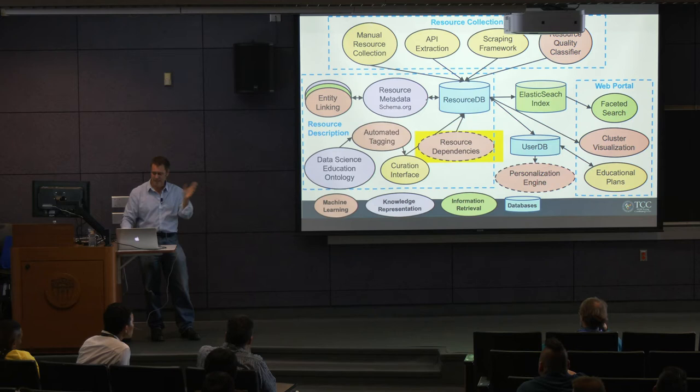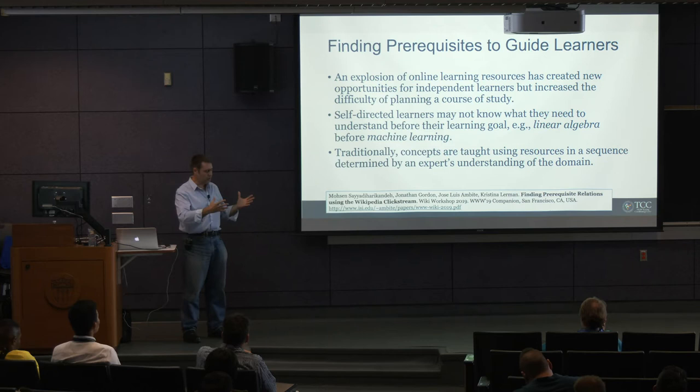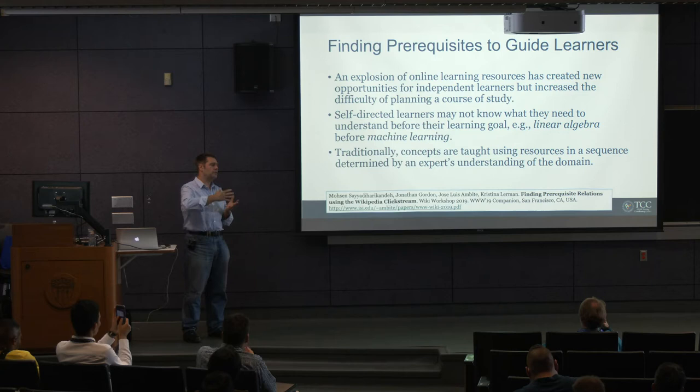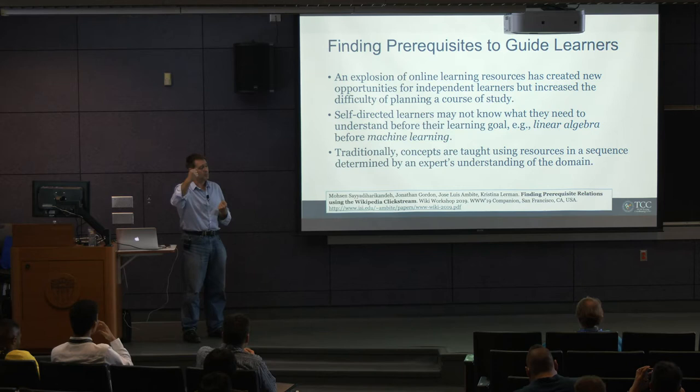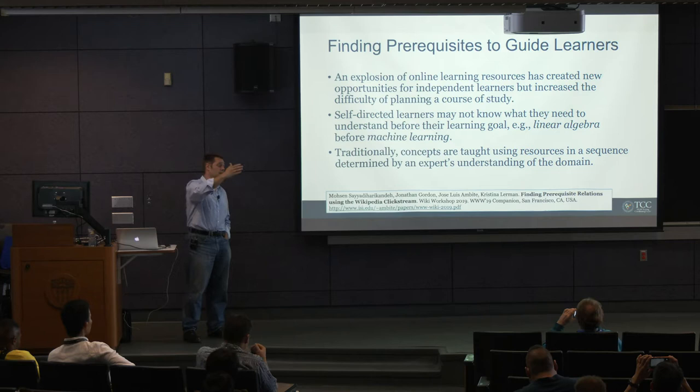Finally, this is current work on resource dependencies. The ultimate goal is that you would search some topic you want to learn about, and we will give you a personalized learning path — a sequence of videos to watch. Maybe you want to learn about variational autoencoders. Before that, you need to know something about autoencoders, before that about neural networks, and before that about logistic regression. So depending on your profile, we get you from where you are to where you want to go. This is a step toward creating that vision.